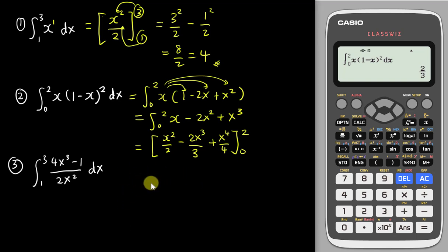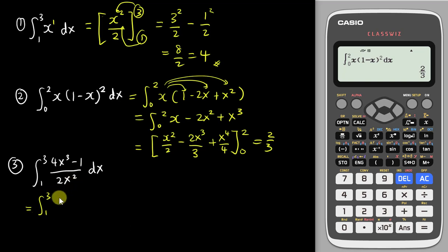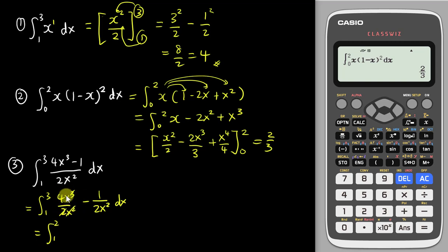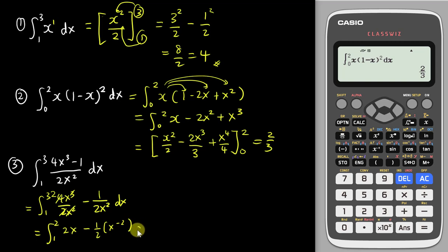For the last question, we have a fraction expression. Since there is no quotient rule in integration, we simplify first by splitting the fraction: 4x cubed divided by 2x squared, minus 1 over 2x squared, then dx. Simplifying: 4 and 2 cancel to give 2, and x cubed over x squared gives x, so we get 2x minus one-half times x to the power of negative two.